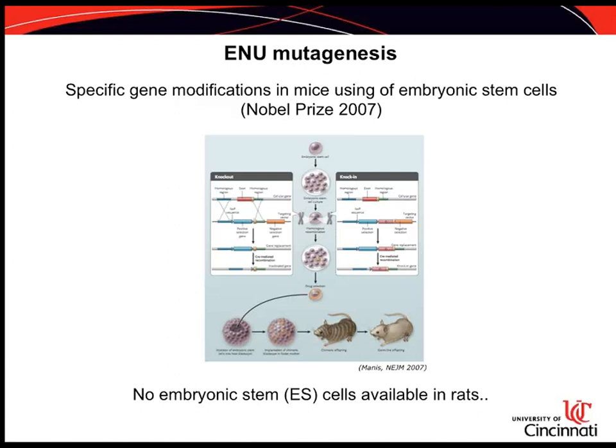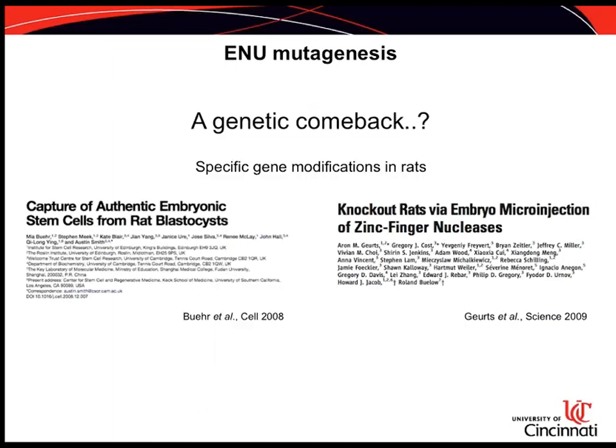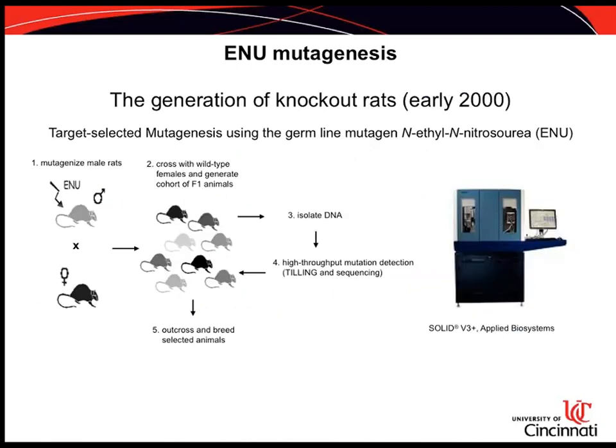Around the 1980s, embryonic stem cells were used in mouse models to do gene modification, and a Nobel Prize was awarded for this in 2007. Unfortunately, no embryonic stem cells were available in rats. However, recent scientific progress changed that — in 2008, a group from the UK published that embryonic stem cells were isolated in rats, which might start a genetic comeback for rats.